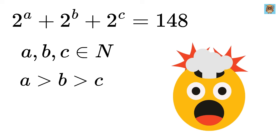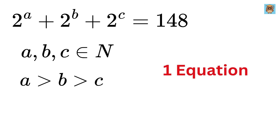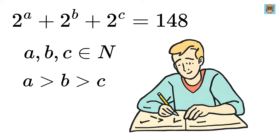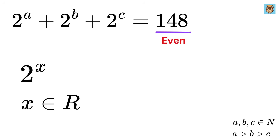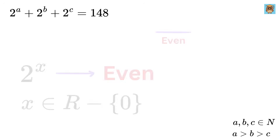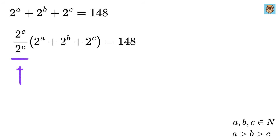It is mind-blowing to note that even though we have only one equation but three variables — which is normally an impossible equation to solve — we will still be able to solve it algebraically. We know that 148 is even, and any power of 2, except 2 to the power of 0, is always even. Now let us multiply and divide both sides of this equation by 2 raised to the power of C.